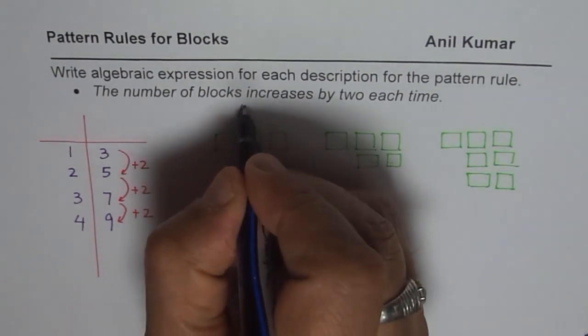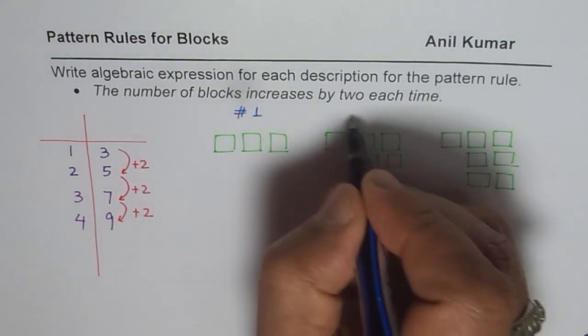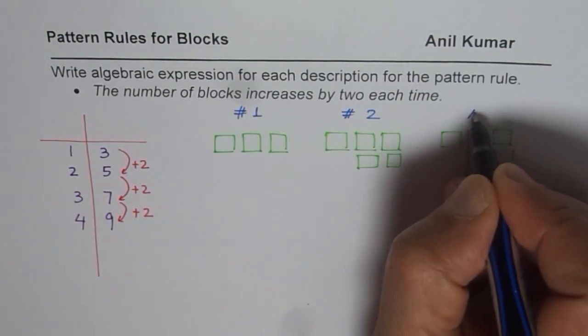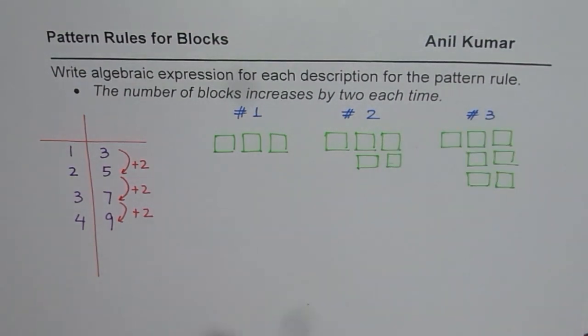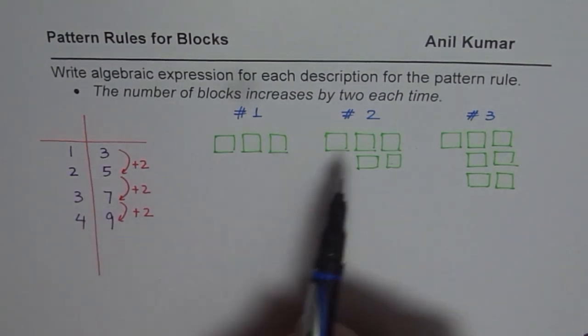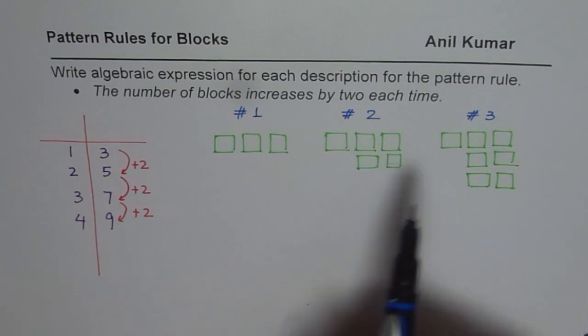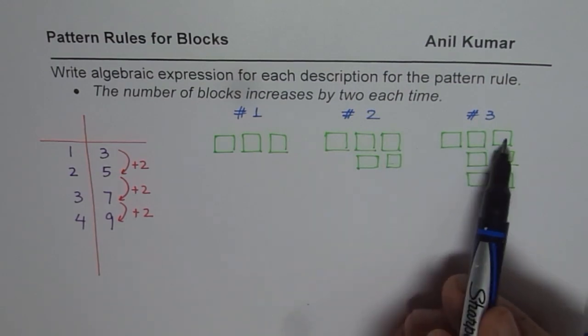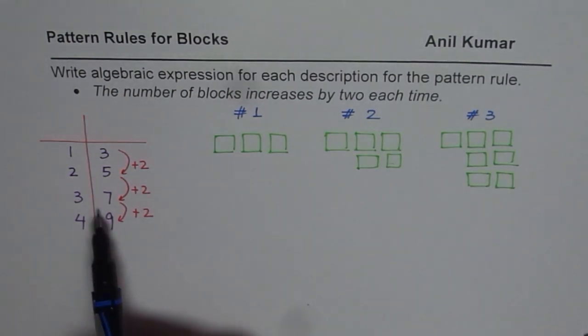So what we have is three different figures. Let me write this as figure number one, this is figure number two, and that is figure number three. So you can count one, two, three - we have three blocks. In the second figure we have one, two, three, four, five. In the third figure we have one, two, three, four, five, six, seven. So it matches with our description.